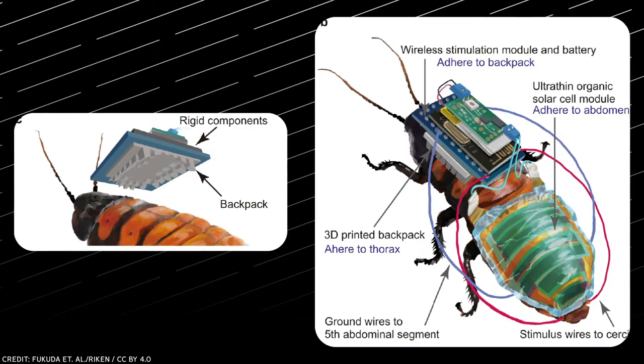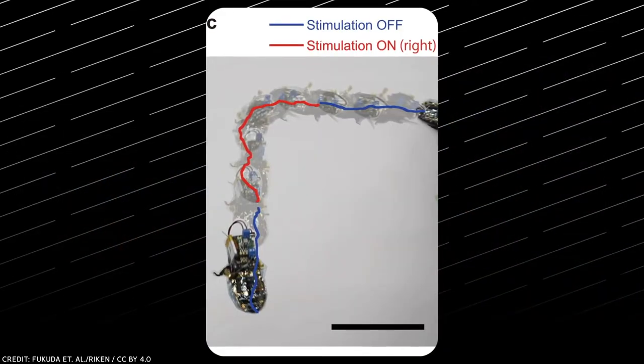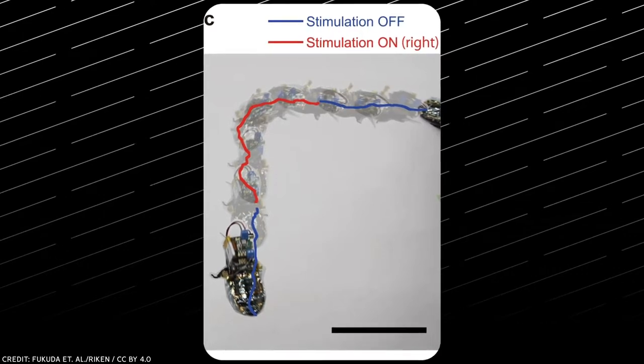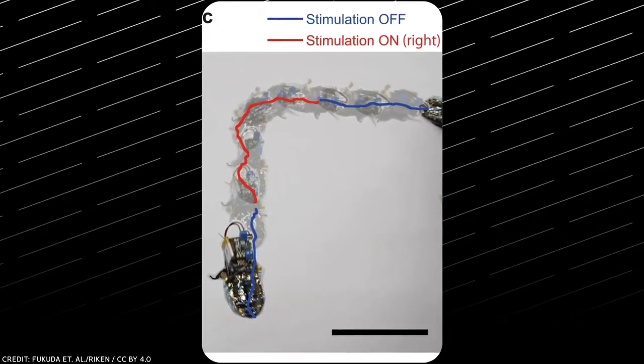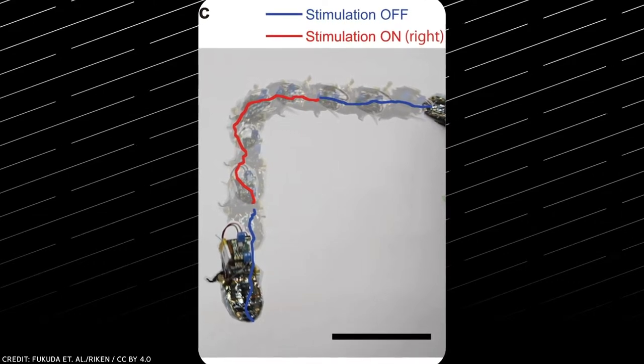There are basically two appendages at the end of the abdomen, one on the left, one on the right. Electrical impulses delivered to either side of the roach have been shown in previous research to be able to stimulate the roach into moving in that direction, providing researchers with some control over the roach's locomotion.